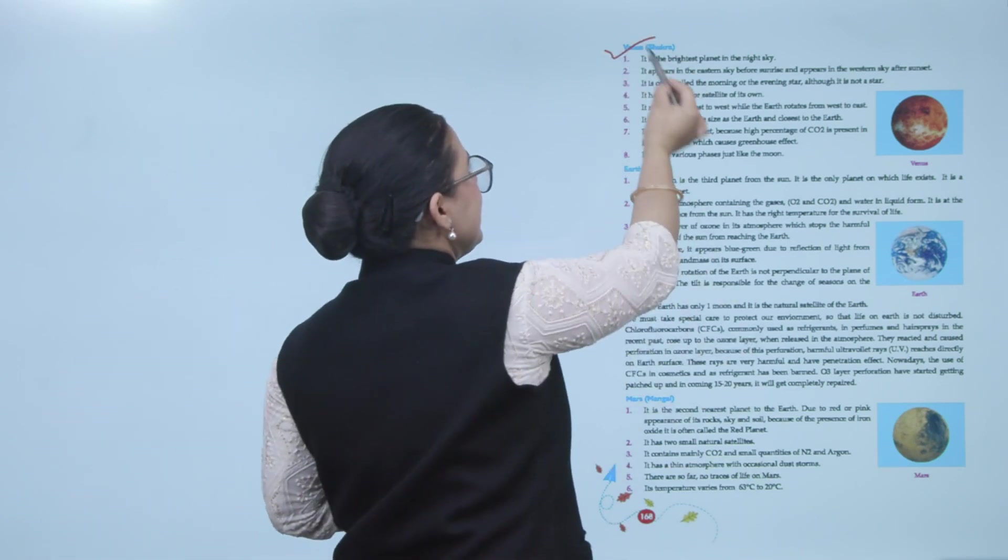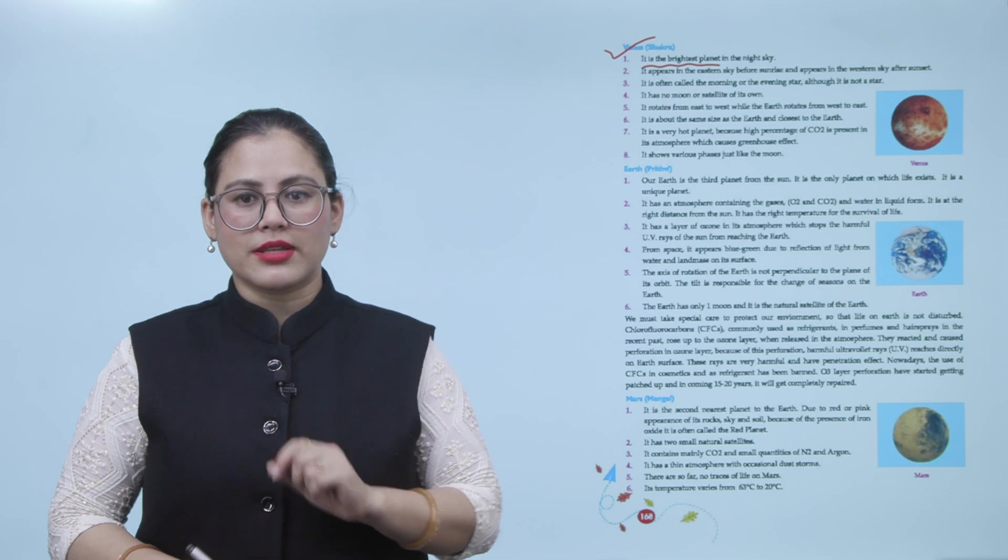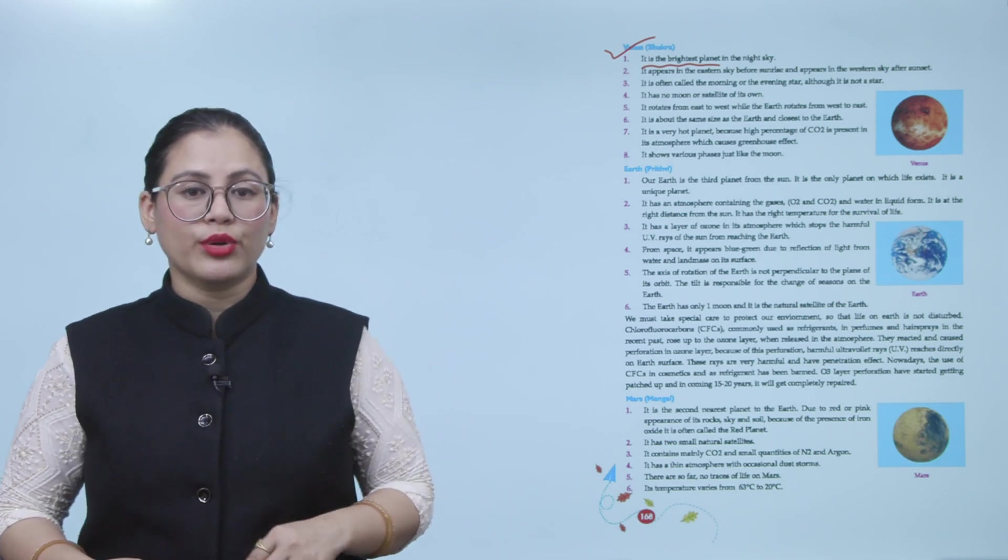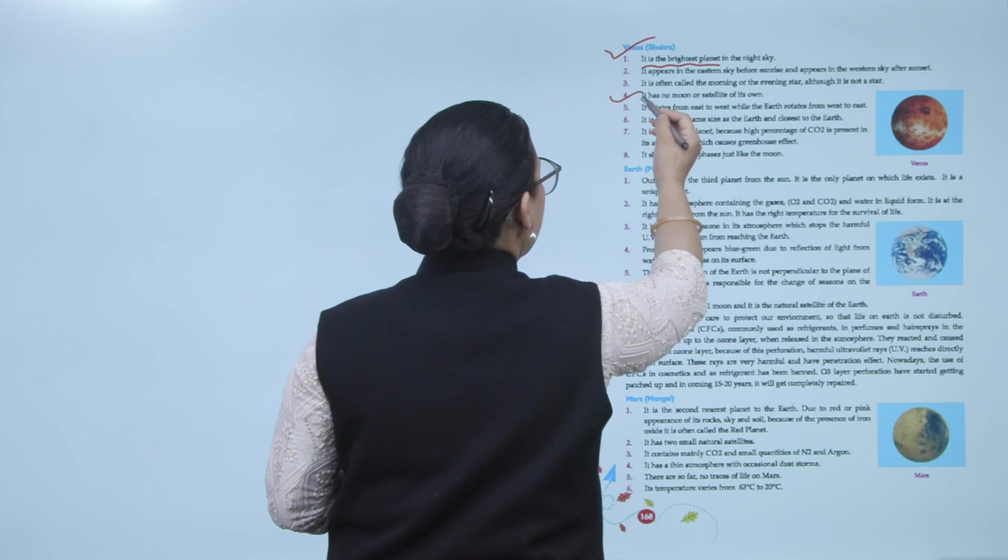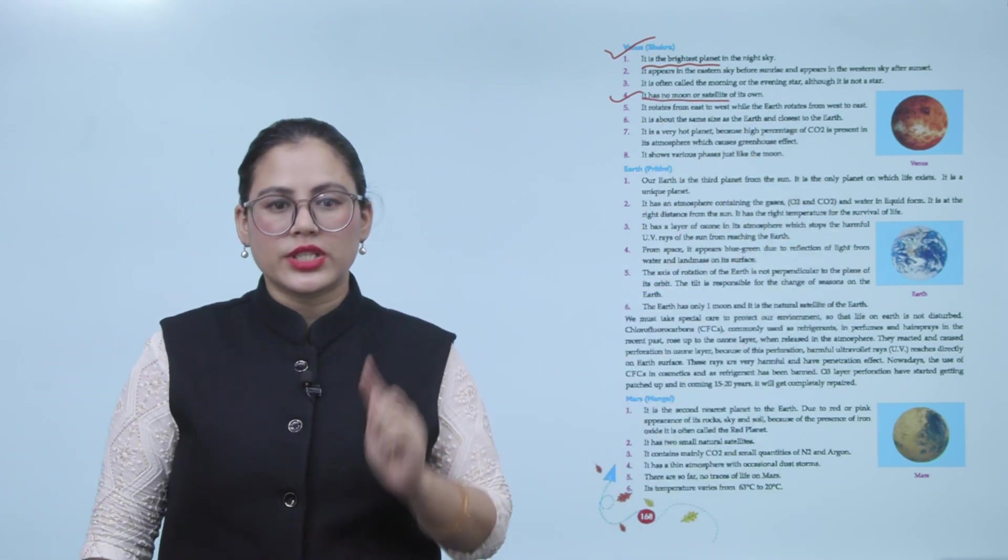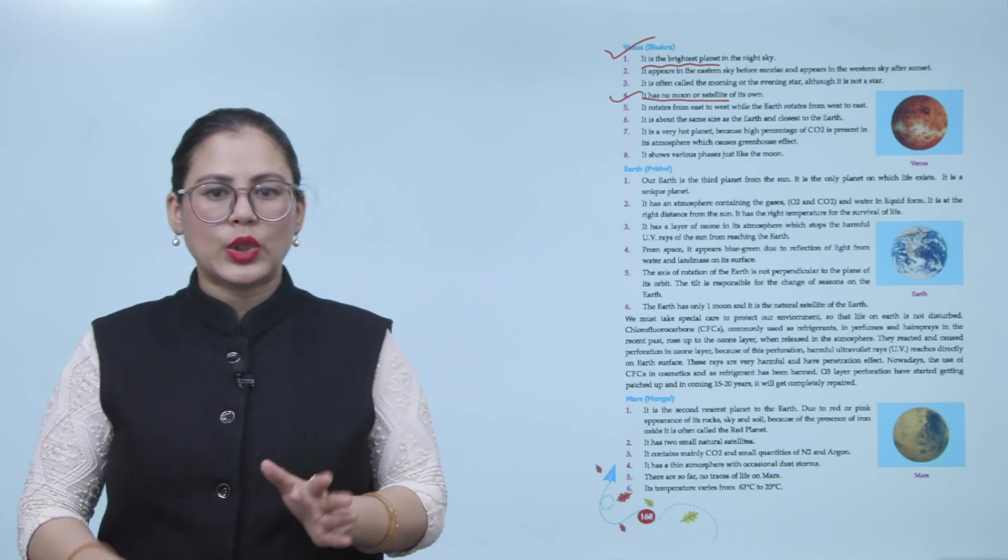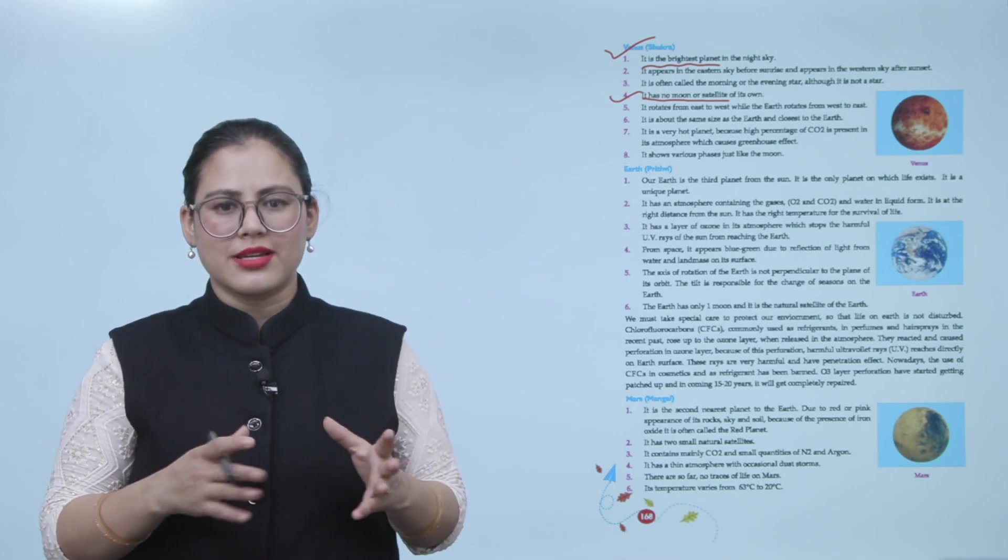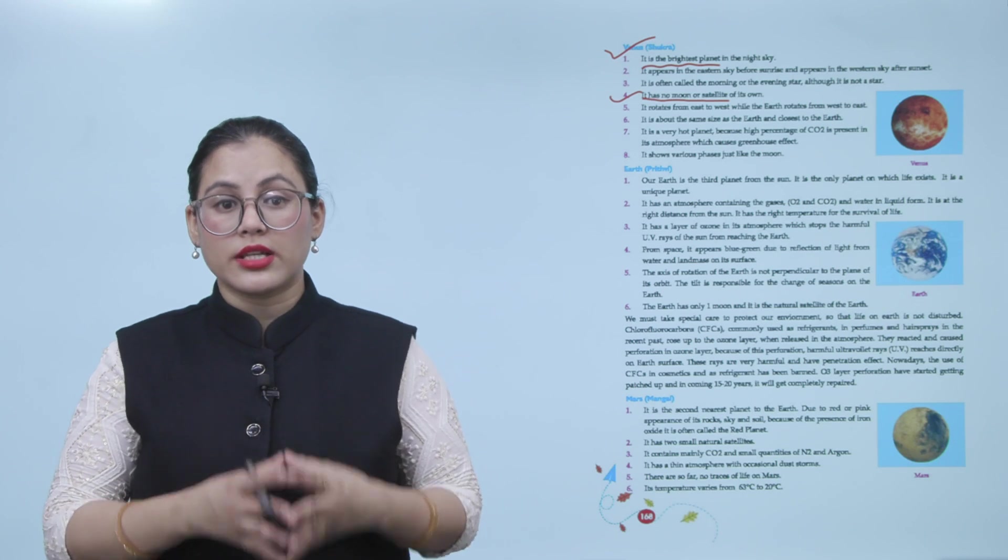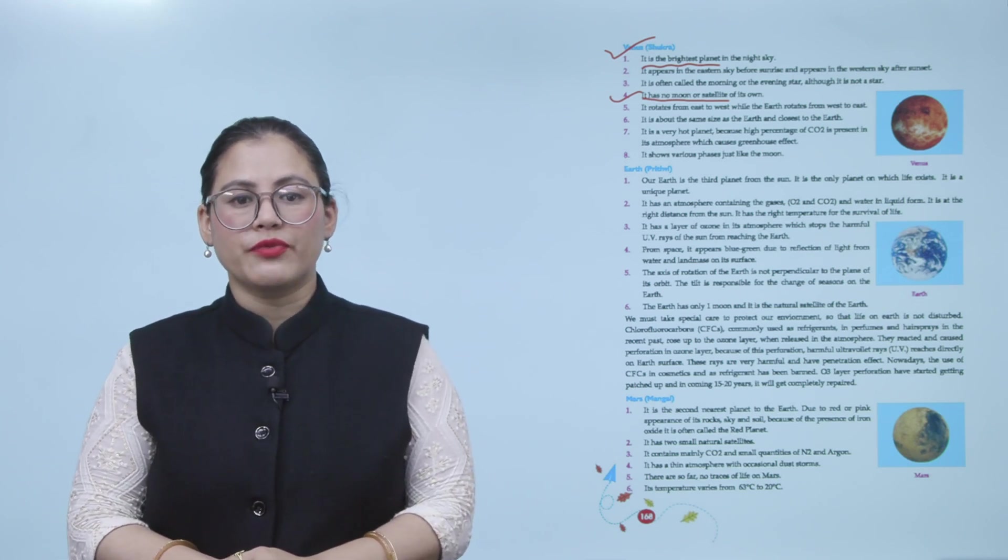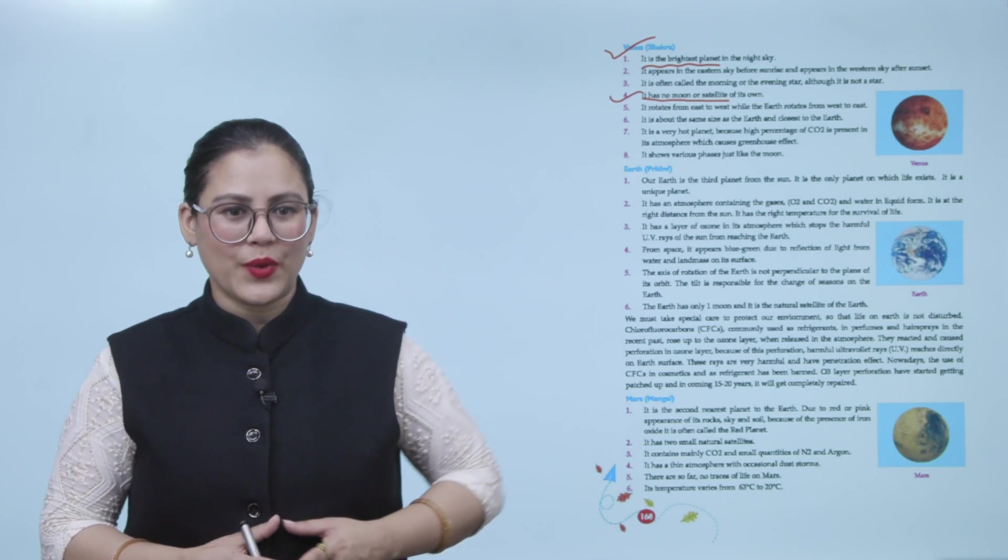Next, Venus or Shukra. It is the brightest planet in the night sky. Number two: It appears in the eastern sky before sunrise and appears in the western sky after sunset. Number three: It is often called the morning or the evening star, although it is not a star. Number four: It has no moon or satellite of its own. Number five: It rotates from east to west, while the earth rotates from west to east. Six: It is about the same size as the earth and closest to the earth. Number seven: It is a very hot planet because a high percentage of carbon dioxide is present in its atmosphere, which causes the greenhouse effect. Number eight: It shows various phases just like the moon.